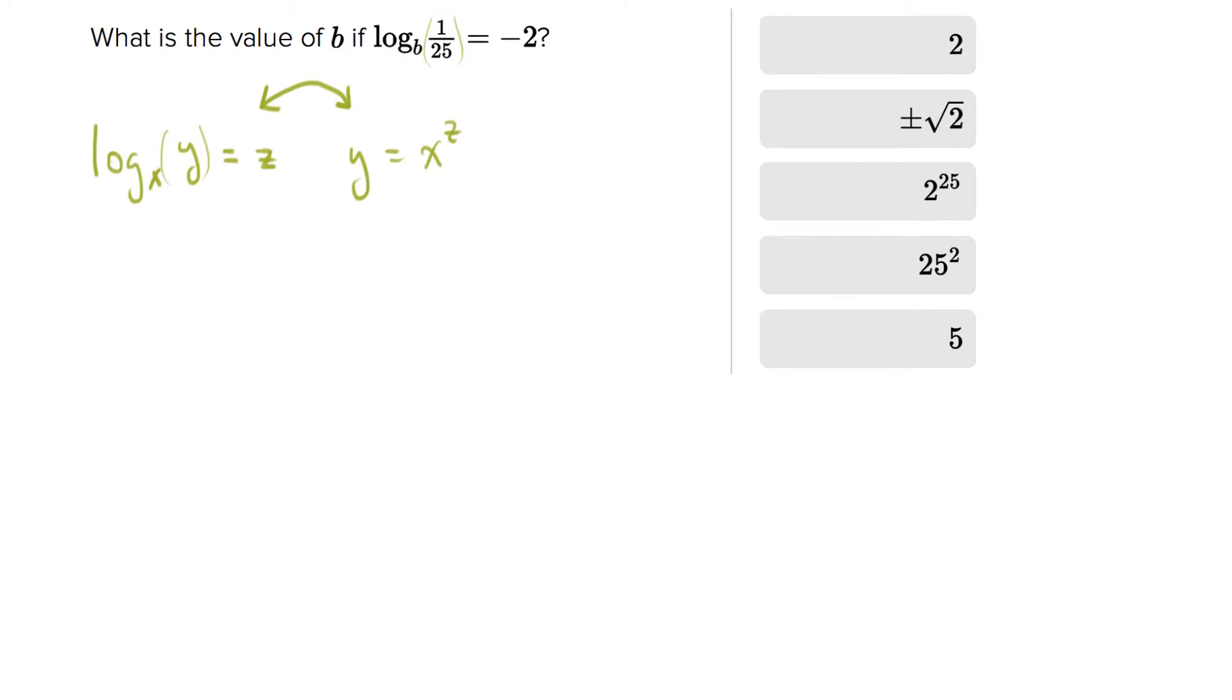The reason why logs were invented is to allow people to solve... suppose you knew y and you knew x, but you wanted to know z. Well, once you have a variable in the exponent, it becomes very difficult to solve for, and people wanted to solve for z. So logs were invented so that you can plug in x and y, look that up on a table, and then it'll give you the answer z. That's the whole point of it.